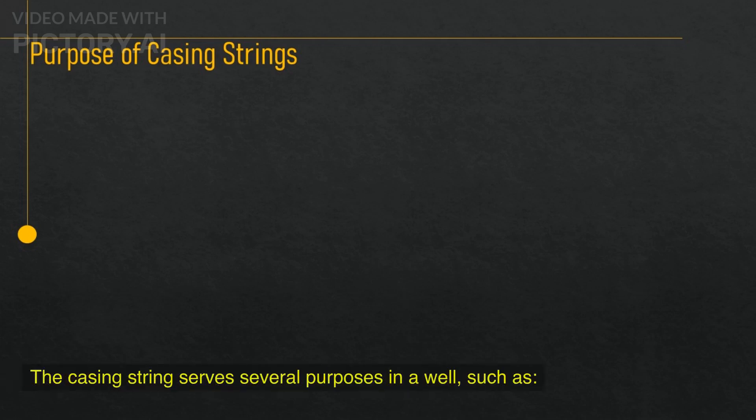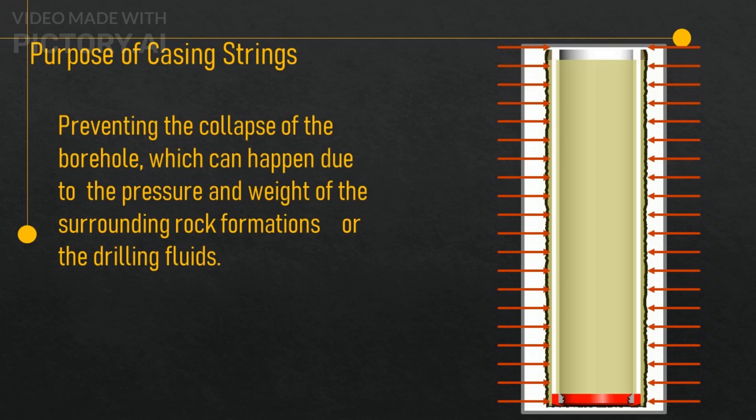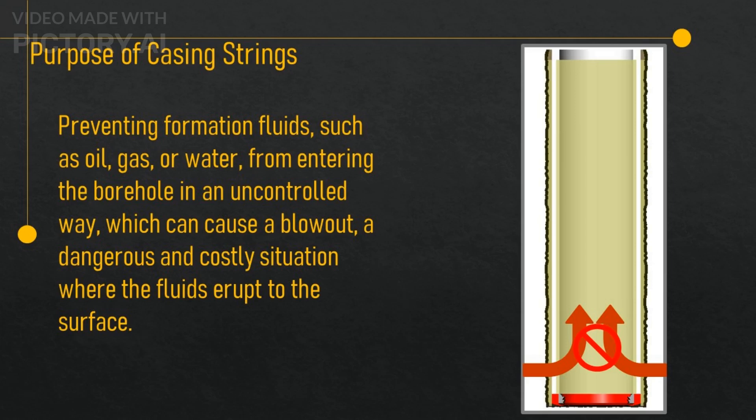The casing string serves several purposes in a well, such as preventing the collapse of the borehole, which can happen due to the pressure and weight of the surrounding rock formations or the drilling fluids. It also prevents formation fluids, such as oil, gas, or water, from entering the borehole in an uncontrolled way, which can cause a blowout — a dangerous and costly situation where the fluids erupt to the surface.